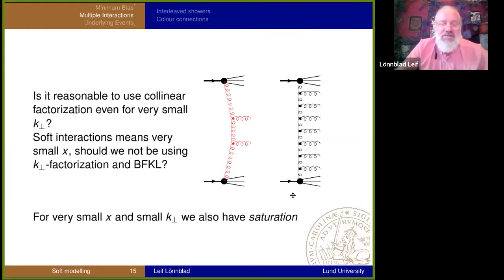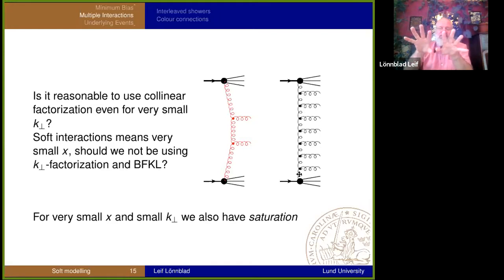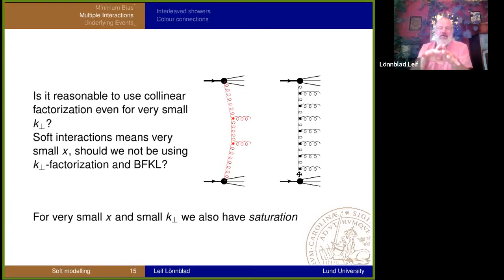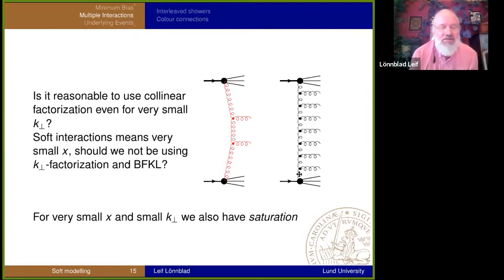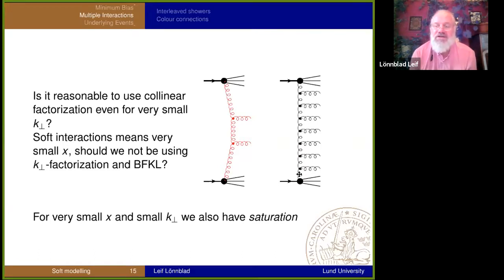Saturation basically means that at very small x, so many gluons are produced that they tend to overlap in impact parameter, meaning they can recombine. One of the exercises for the recitation tonight is: can you draw a pomeron diagram — a cut pomeron diagram — that corresponds to a gluon recombination saturation diagram?